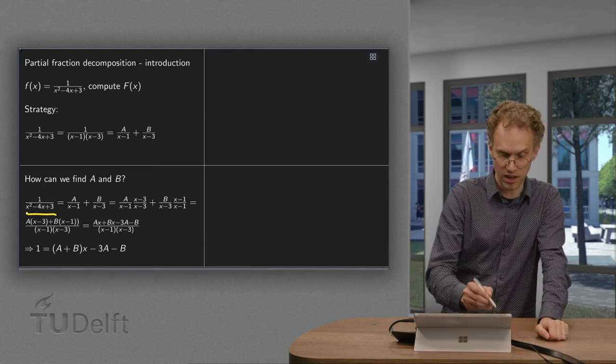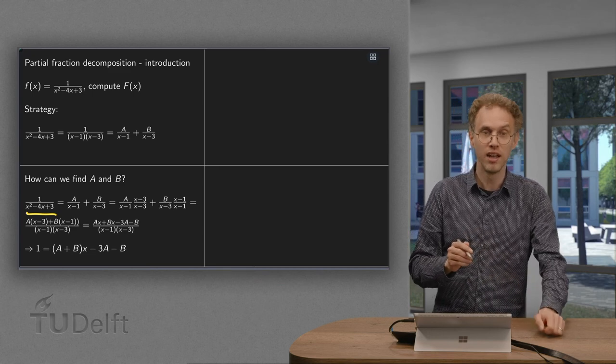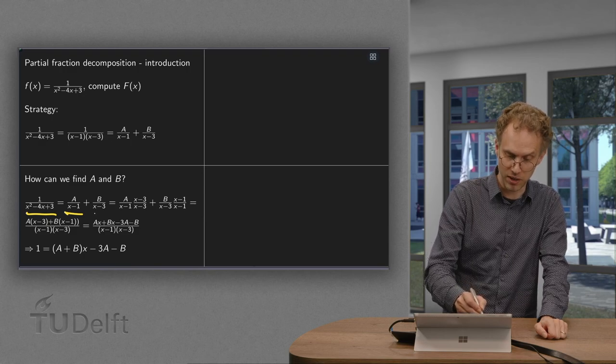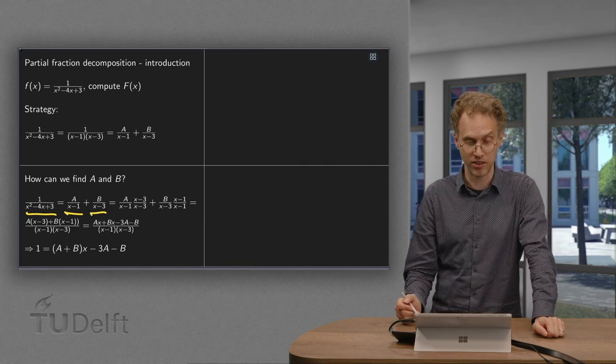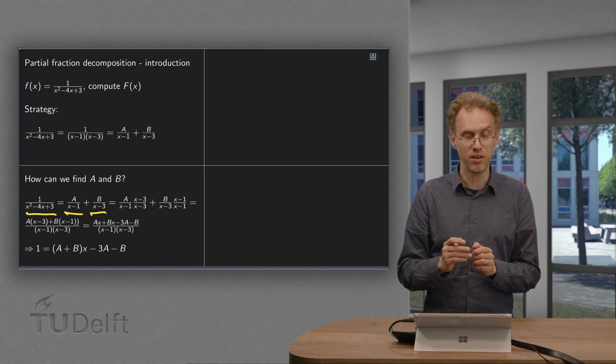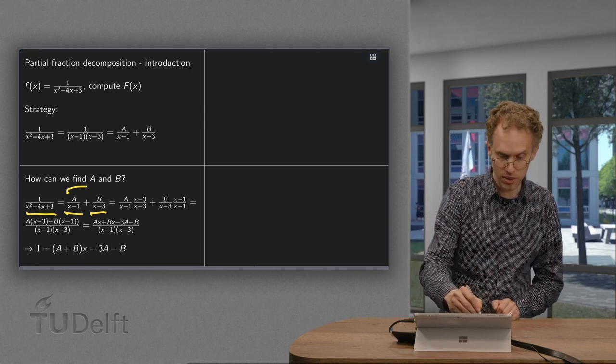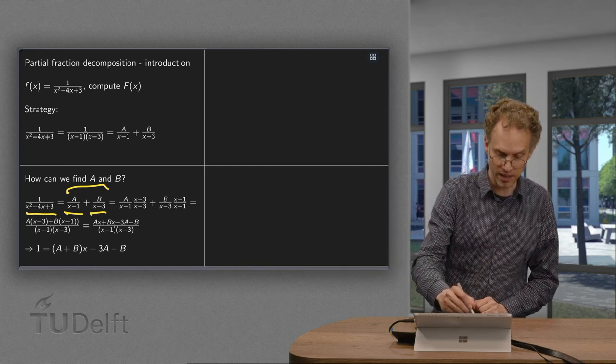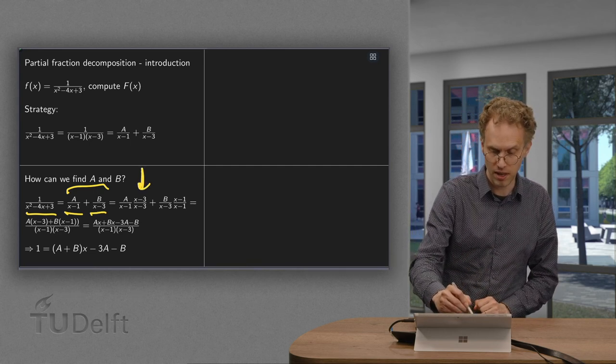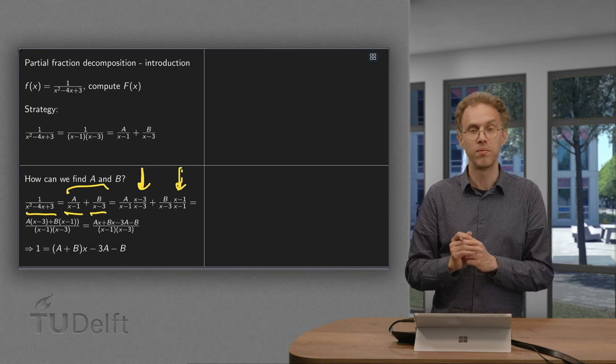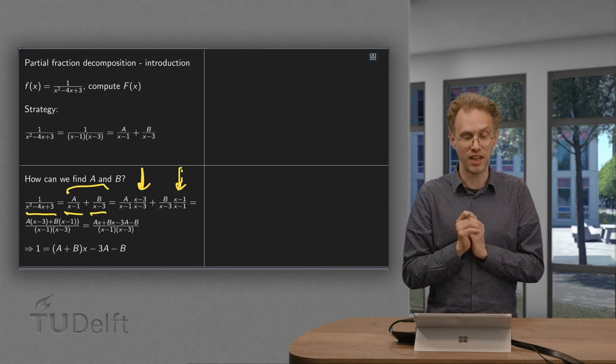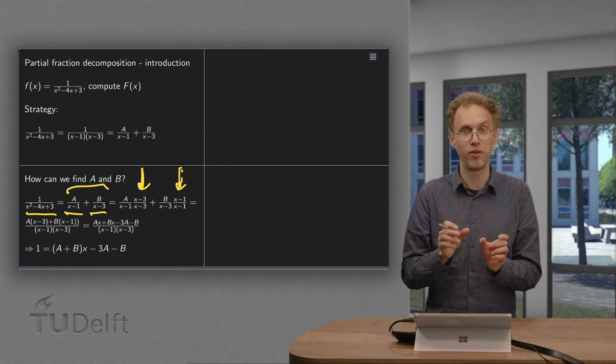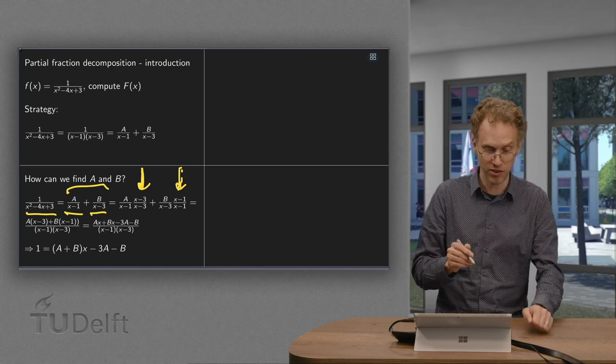We start with 1 over (x squared minus 4x plus 3). We want to write it as something divided by (x minus 1) plus something else divided by (x minus 3). Then we turn the sum of these fractions into one fraction by multiplying by 1 in each case. By using this multiplication we make sure that the denominator of both terms is the same: (x minus 1) times (x minus 3).